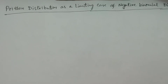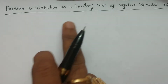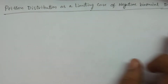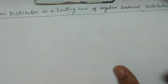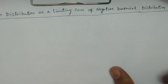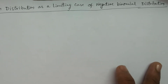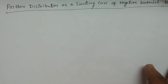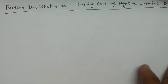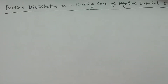Welcome to B.S.C. Statistics students. In this lesson, I explain Poisson distribution as a limiting case of negative binomial distribution. That means, if you consider negative binomial distribution under some particular conditions, it becomes Poisson distribution.